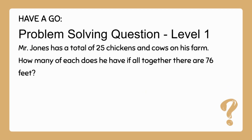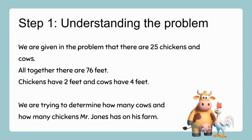Let's look at a problem. Mr. Jones has a total of 25 chickens and cows on his farm. How many of each does he have if altogether there are 76 feet? Step one — understand the problem: there are 25 chickens and cows altogether, and 76 feet total. Chickens have two feet and cows have four feet. We're trying to determine how many cows and how many chickens Mr. Jones has.